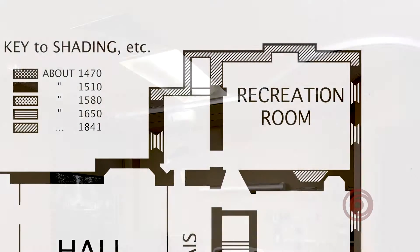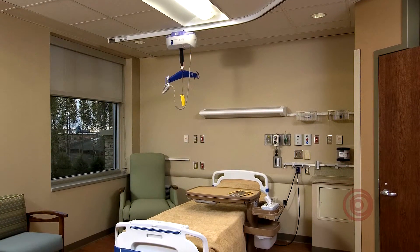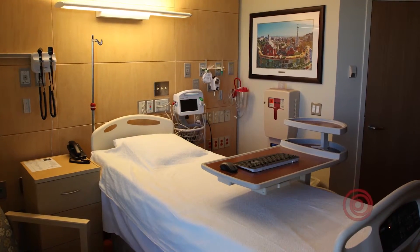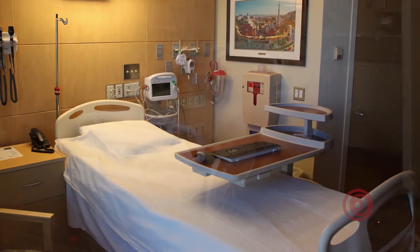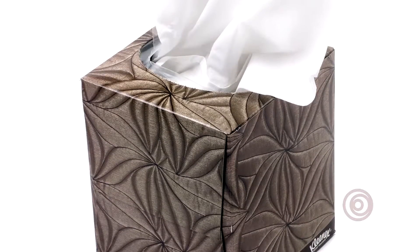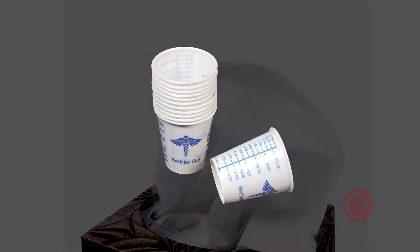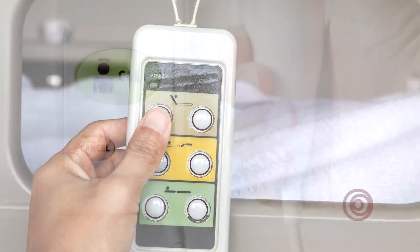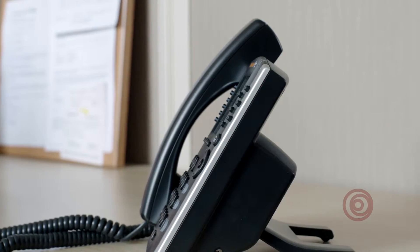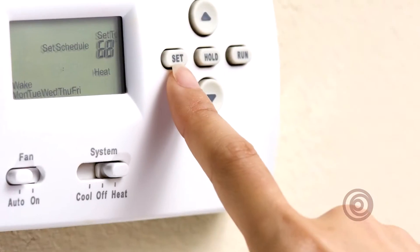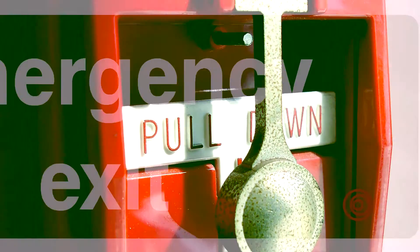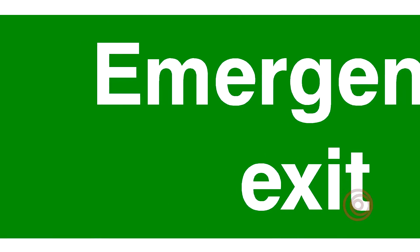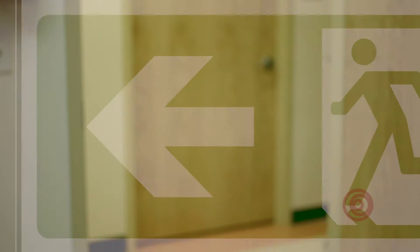Within your patient room, this means describing the furnishings and their placement, including bed and restroom location, convenience items such as tissues and cups. The location and operation of bed controls, the call button, telephone, television, environmental controls, fire alarm pull boxes, and emergency plan and exits. This also includes communicating the arrival of food and identifying the location of food and utensils on the tray.